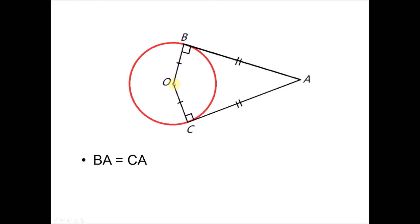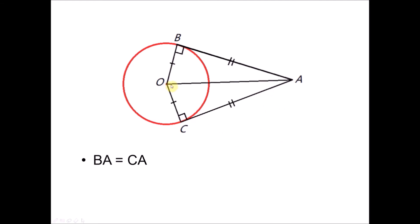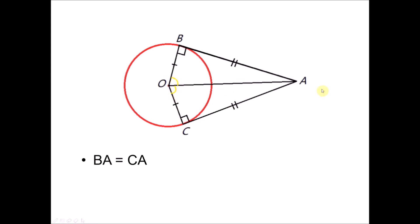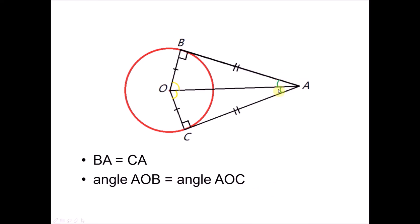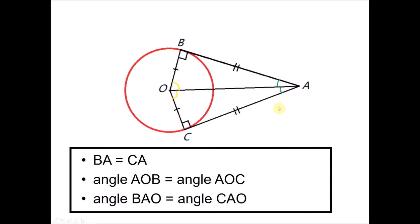Next, when we draw a line from O to A, based on what we learned, we know that angle A-O-B equals angle A-O-C. And the two green angles are also equal: angle B-A-O equals angle C-A-O. So whenever two tangents intersect at a point, we can conclude that BA equals CA, angle AOB equals angle AOC, and angle BAO equals angle CAO.